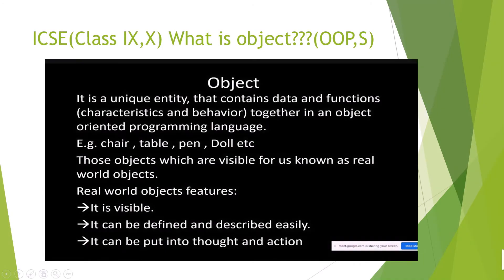Hello guys, welcome to my second video of object oriented programming. In this video I will explain what is object, what is class, and what is real-world object, comparing it with software object in object oriented programming. So without wasting any further time, I will start the video. What is object? Anything in our surroundings — humans, pen, pencil, table, chair, TV, laptop — these all are objects.